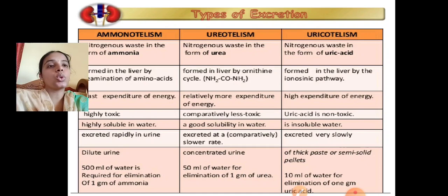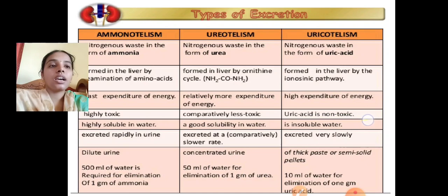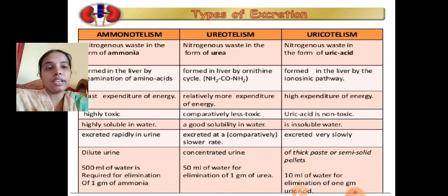In uricotelism, organisms eliminate nitrogenous waste in the form of uric acid. Uric acid is formed in the liver by the isoethenic pathway and requires highly expenditure of energy. Uric acid is non-toxic and insoluble in water. It is excreted very slowly, in the form of thick paste or semi-solid pellets, requiring only 10 ml of water for the elimination of 1 gram of uric acid.